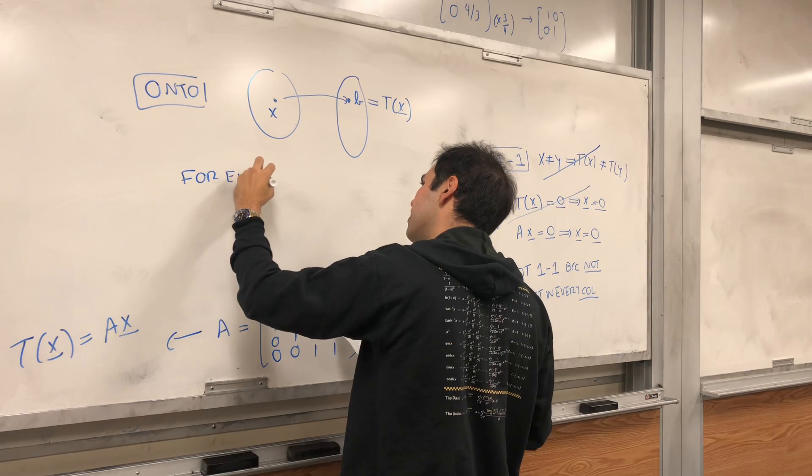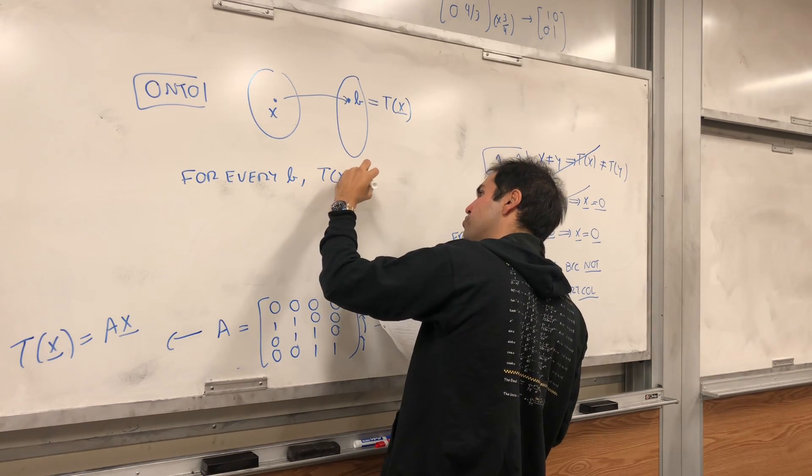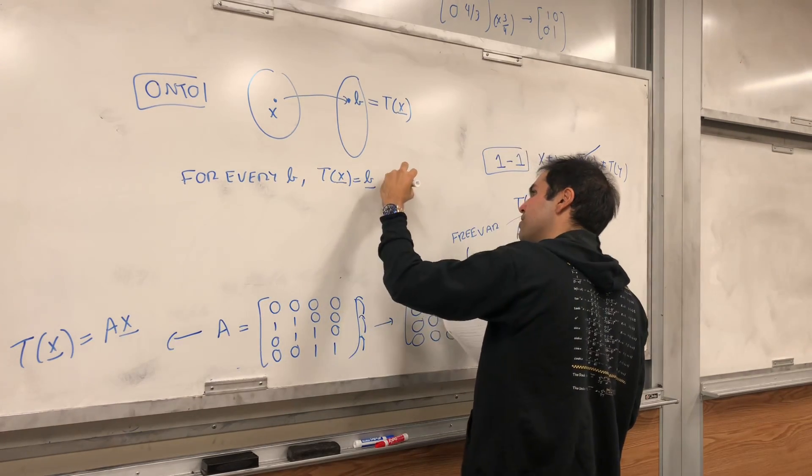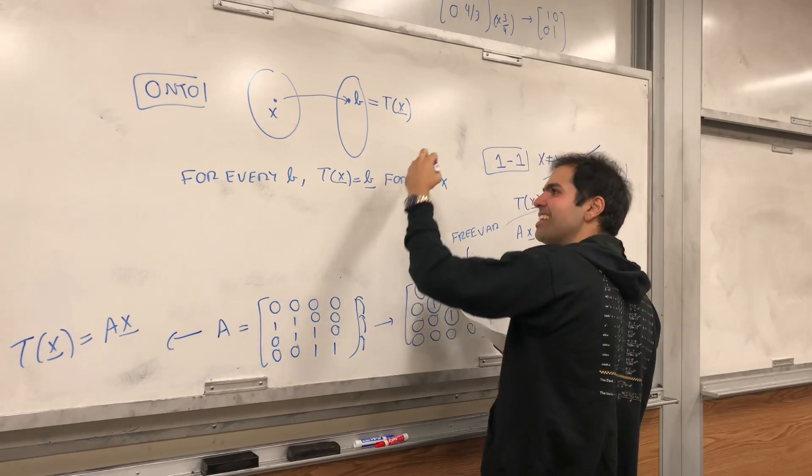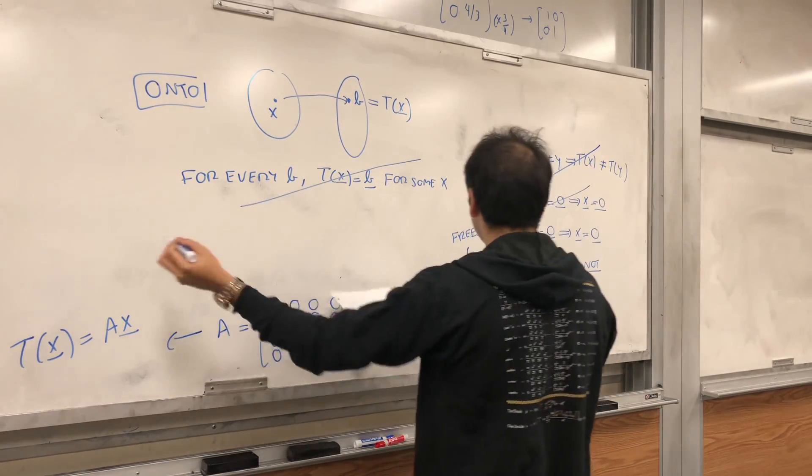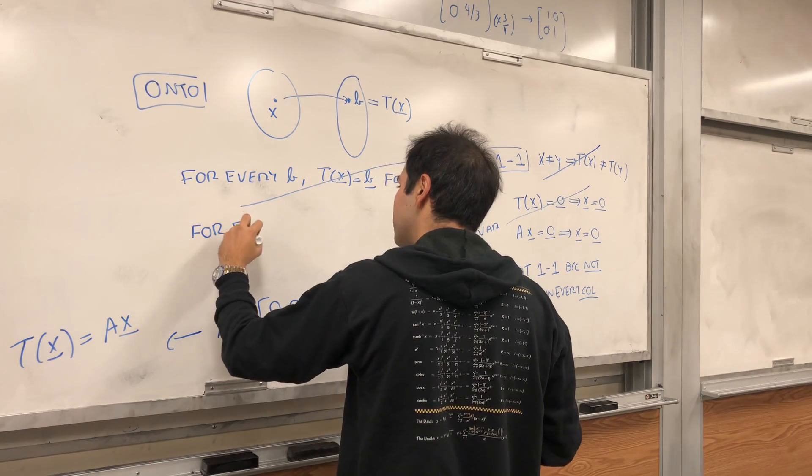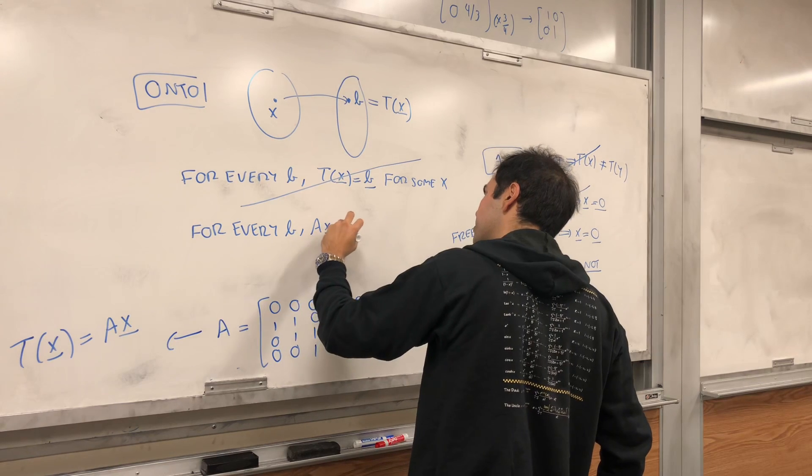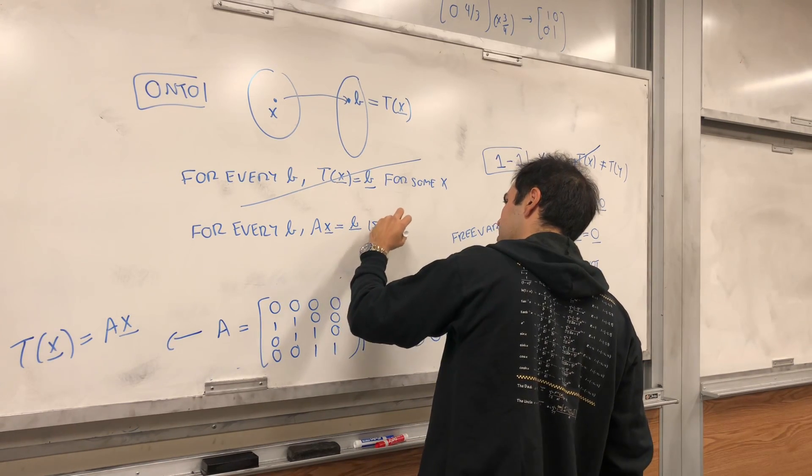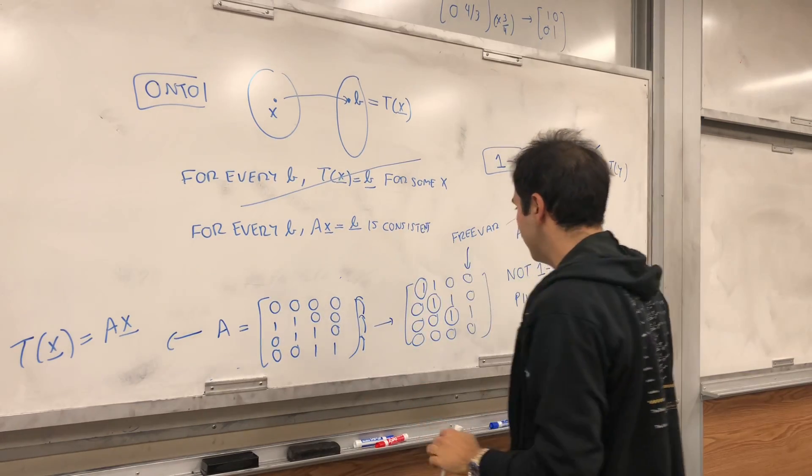The definition really means for every b, tx equals to b for some x. But, again, this is like the abstract definition. Here, we want to use matrices. So, for every b, ax equals to b is consistent.